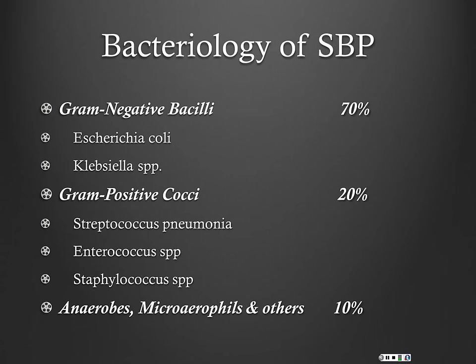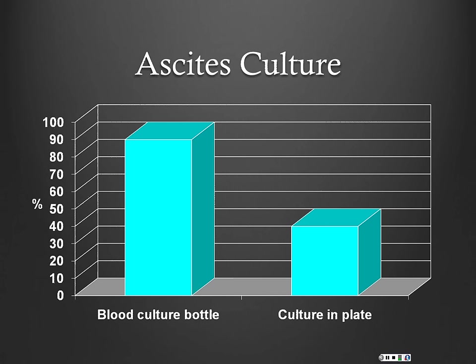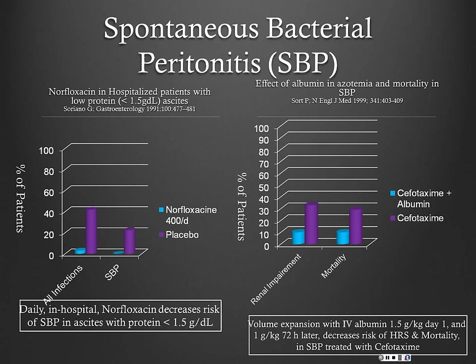Other causes of elevated PMNs besides antibiotics include bleeding, cancer, TB, and pancreatitis. As far as bacteriology, gram-negative bacilli are by far the most common — E. coli and Klebsiella — corresponding to the coverage we typically use. Gram-positives are less common, usually strep species or enterococcus. Anaerobes are even less common. Your chance of a positive culture is significantly higher if you do bedside inoculation of culture bottles rather than sending a tube to the lab.